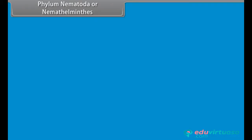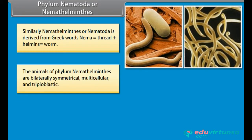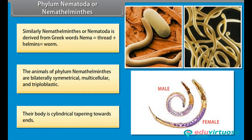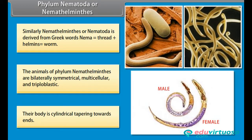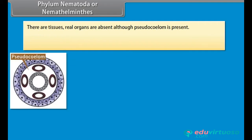Phylum Nematoda or Nemathelminthes. Nemathelminthes or Nematoda is derived from Greek words nema, meaning thread, plus helminthus, meaning worm. The animals of phylum Nematoda are bilaterally symmetrical, multicellular, and triploblastic. Their body is cylindrical, tapering towards the ends. There are tissues present; real organs are absent, although pseudocoelom is present.